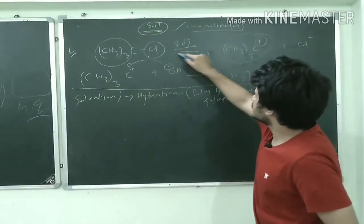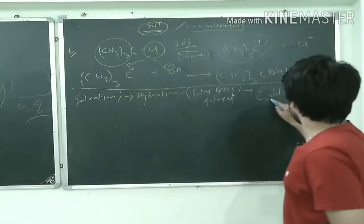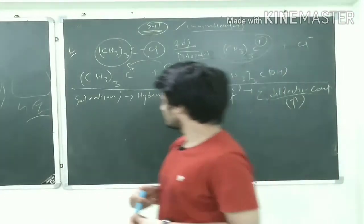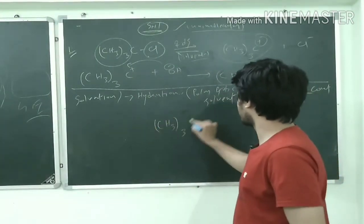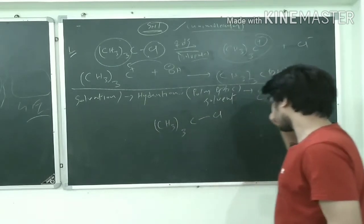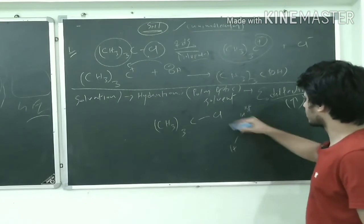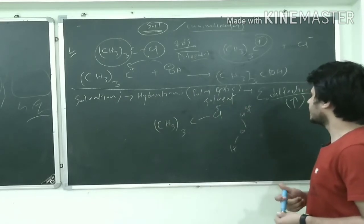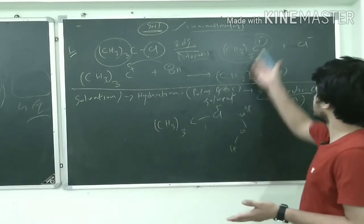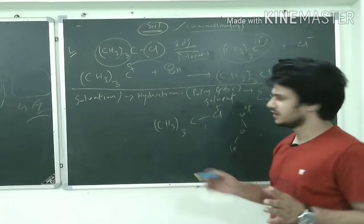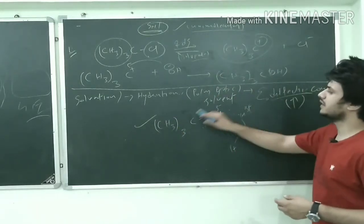This is (CH3)3CCl and we have water molecule out here. So this delta plus of water and delta minus of Cl they can interact properly. This bond will ultimately break which will give you that carbocation. So it is very simple - this will interact, this bond will break, and this will give you a carbocation.